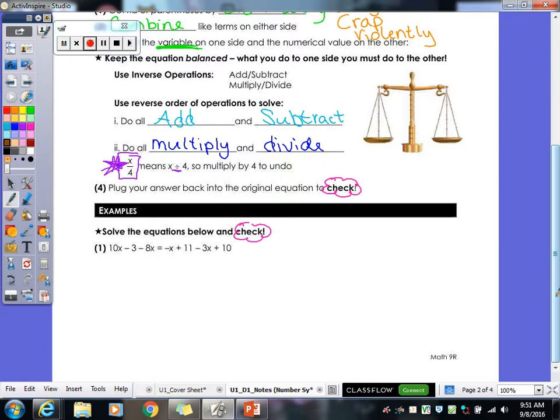Alright, so let's take a look at our first example here. So going through our order, our DCV, do we have any parentheses to distribute through? No. Okay. So next goal is we're going to combine any like term. So over here on my left side, I have a 10x and a negative 8x. So combine those. What do we get? So we have 2x minus 3 on our left side. So then over on the right side, I have a negative x and a negative 3x. So what does that give us? Negative 4x. And then my 11 plus my 10 plus 21. There we go. We combine our like terms on the left and we combine our like terms on the right.